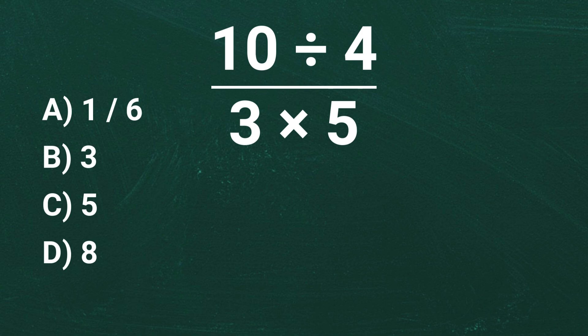Alright, the key to solving this problem is following the correct order of operations and simplifying step by step. Before we start dividing, let's rewrite the expression in a simpler form. We have 10 divided by 4, all divided by 3 times 5.